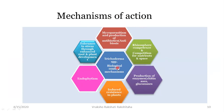Trichoderma exerts biological control through several mechanisms: it shows mycoparasitism, produces antibiotics — that is antibiosis, is active in the rhizosphere, competes for nutrients and space, produces enzymes like chitinases and glucanases, induces resistance in the plant, acts as an endophyte showing endophytism, makes the plant tolerant against stress, and also helps in root development of plants.